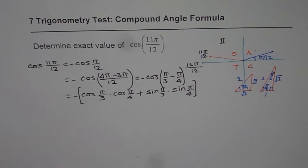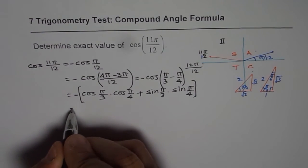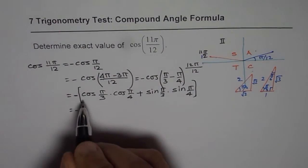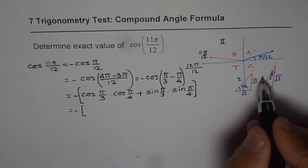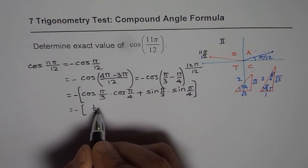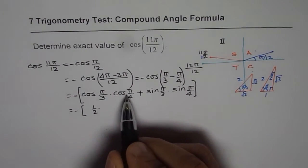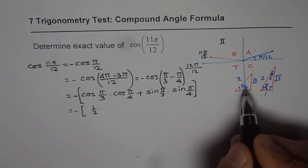Now we can substitute the values and simplify. So we have minus cos pi by 3 is 1 over 2 times cos of pi by 4 will be square root 2 over 2.